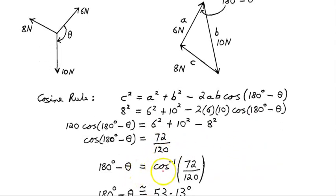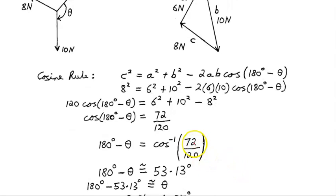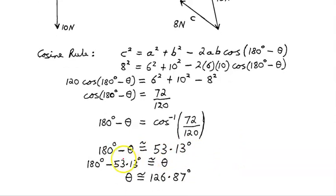Now, 180 minus theta is inverse cos 72 on 120 degrees, and what that's doing is, this is giving us the angle in the first quadrant. So 180 degrees minus theta is 53.18, but we need to solve for theta, so 180 degrees minus 53.13 degrees, so theta is the difference between those. So theta is 126.86 degrees.